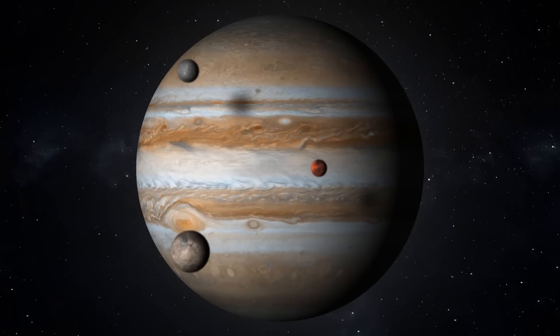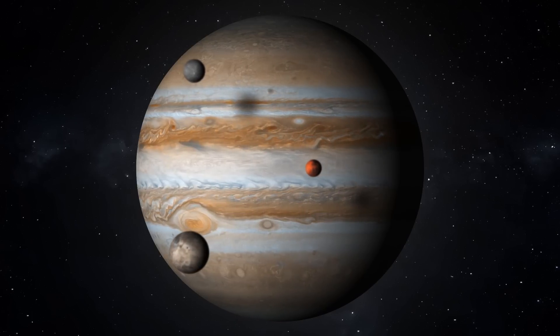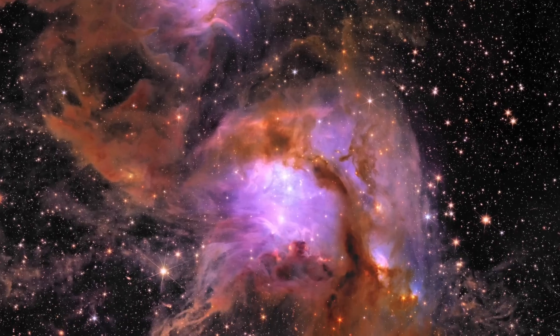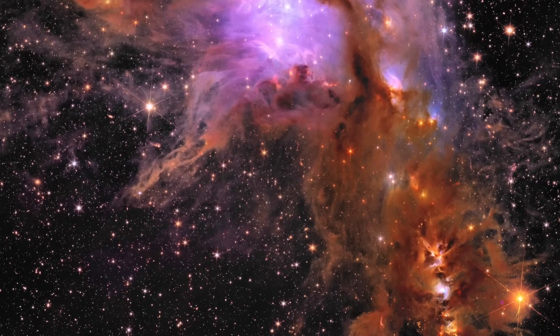Euclid's instruments are so sensitive that they can detect objects just a few times the mass of Jupiter. It's revealed over 300,000 new objects in this image alone, some of which are rogue planets that aren't associated with any star. It's still unclear whether these planets were ejected from their original solar systems or if they formed independently in the depths of space. But with enough of them, they could potentially account for dark matter.